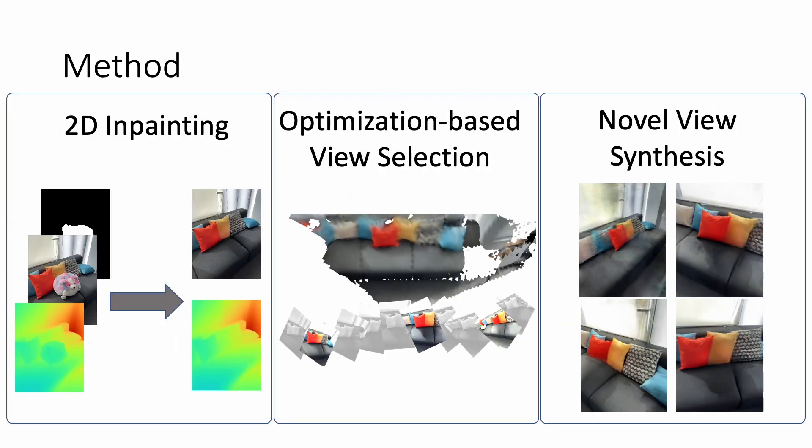We first inpaint the captured RGB-D frames and corresponding object masks using an off-the-shelf 2D inpainting method. Second, we lift these inpaintings into 3D using a neural radiance field. The key insight that drives our method is that while each 3D inpainting is plausible, they are not multi-view consistent.